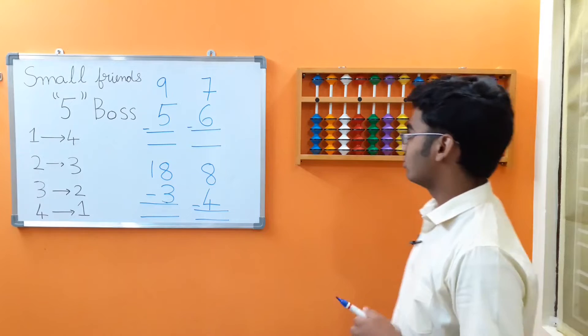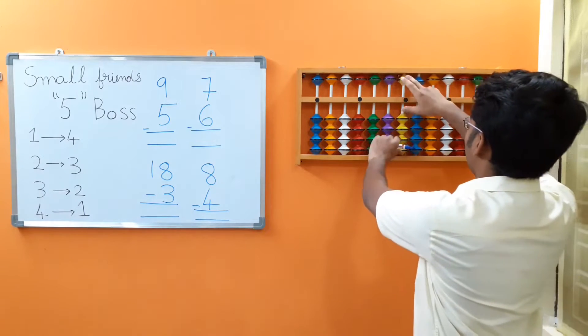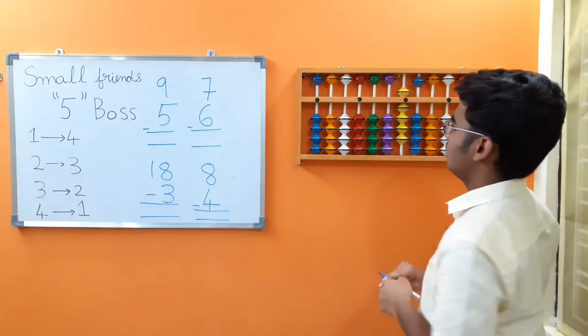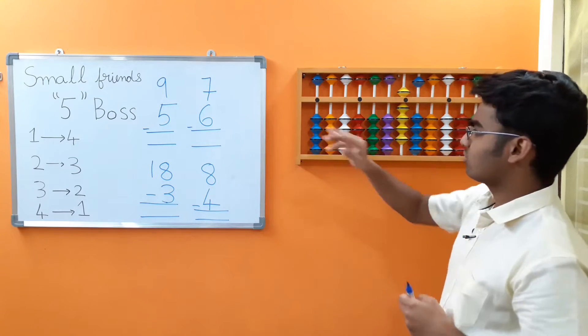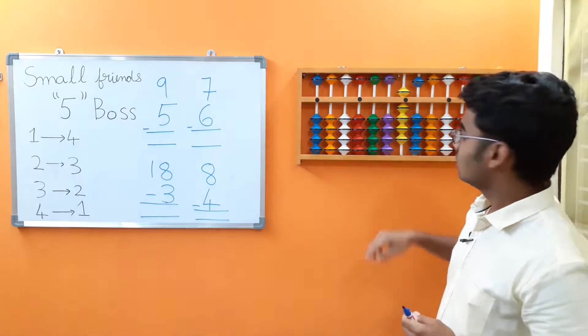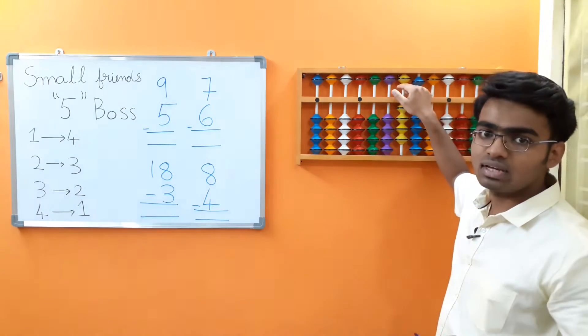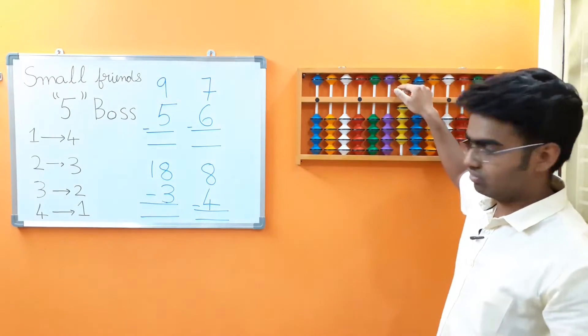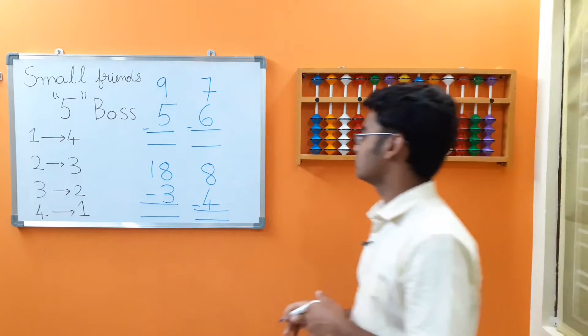9 minus 5. We have to subtract 5 here. So we can just move up this bead so that we can subtract 5. We got the answer as 4.